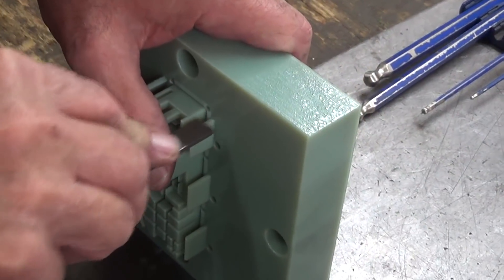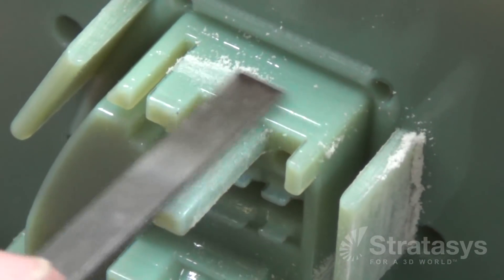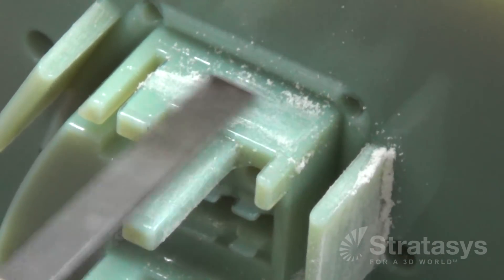After some light sanding of the mold, it is ready for the injection molding machine when molded parts will be manually removed.